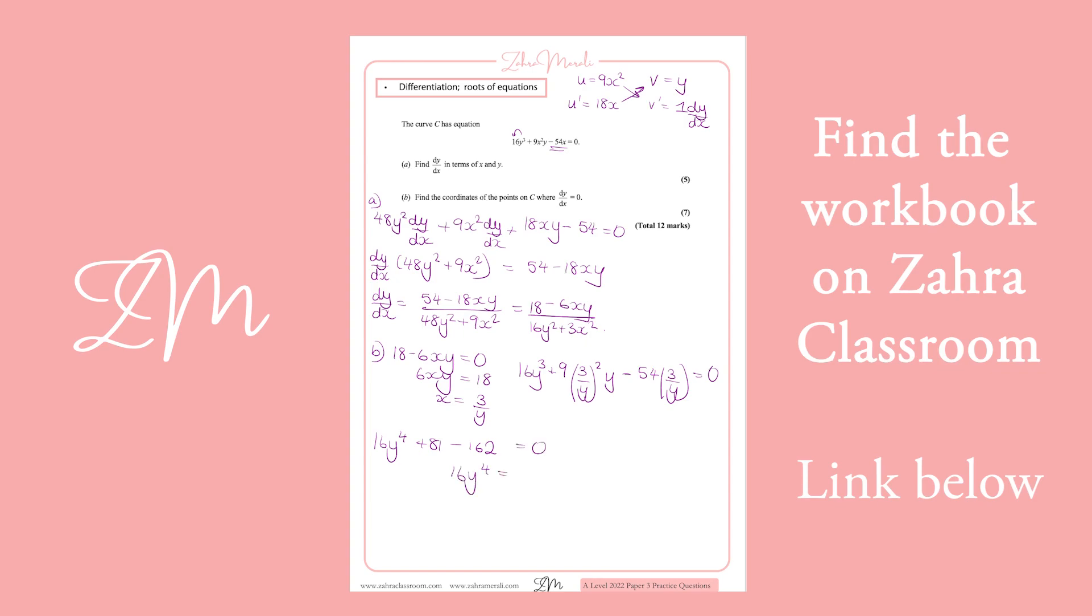So 16y⁴ = 81, and y⁴ = 81/16. To find y, we take the square root and the square root again. Square root of 81 is 9, root again gives us 3. The same at the bottom gives us 2. But remember, we have plus or minus, so y = ±3/2.